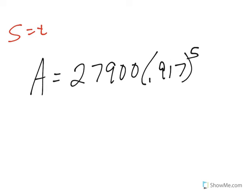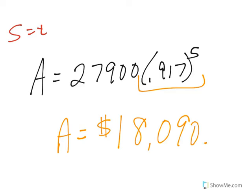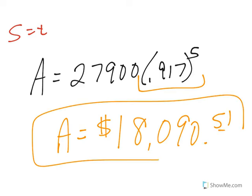Now I put the 5 in because we're evaluating the model at 5 years. Depending on your calculator, you might have to find the exponential first before multiplying by 27,900. Otherwise, just type it all in at the same time. We'll end up with an ending amount to the nearest penny of $18,090.51 using the model for exponential decay.